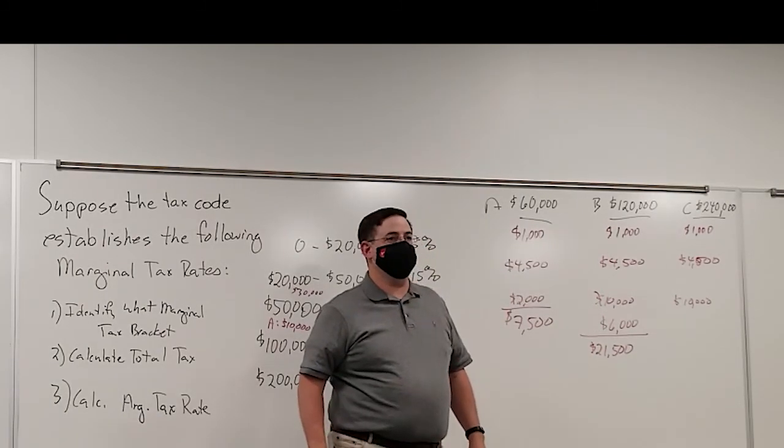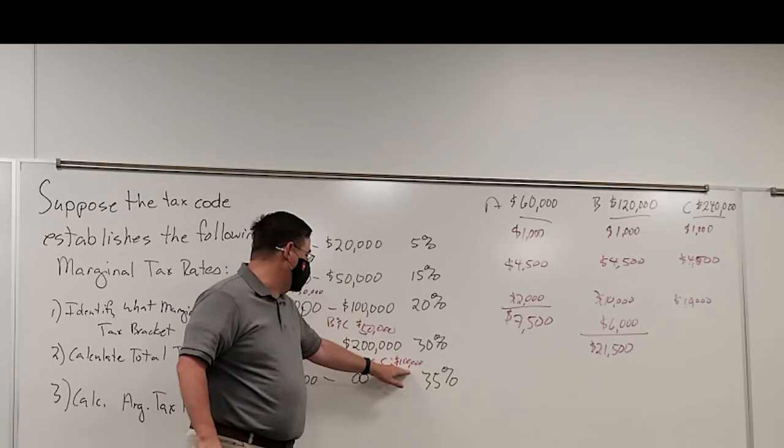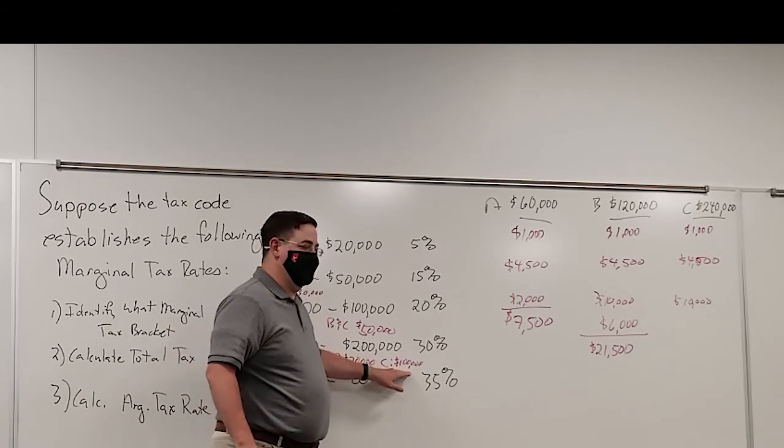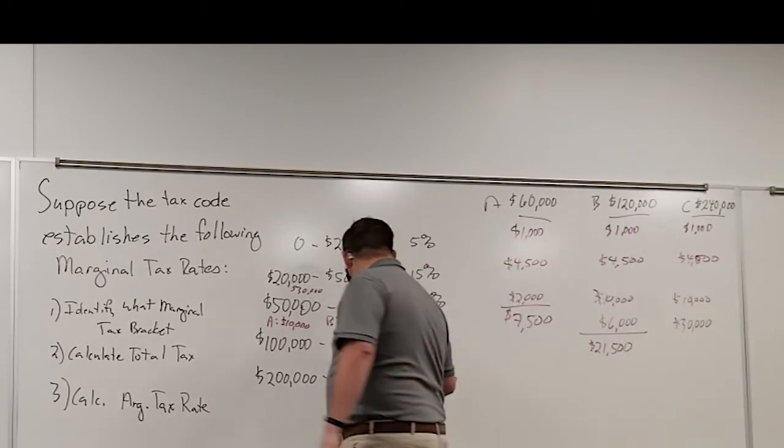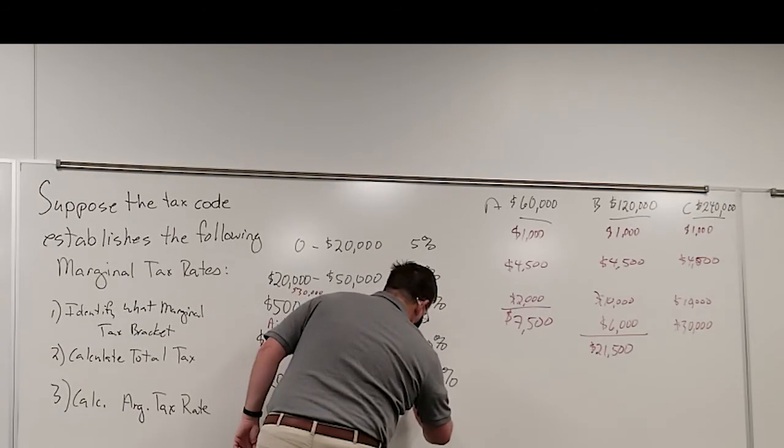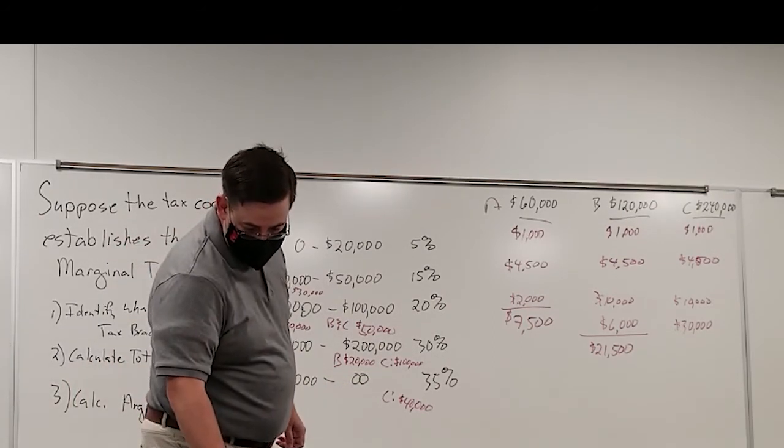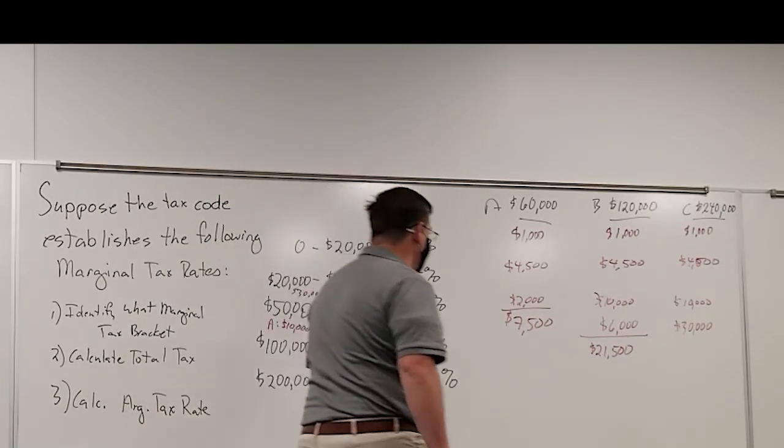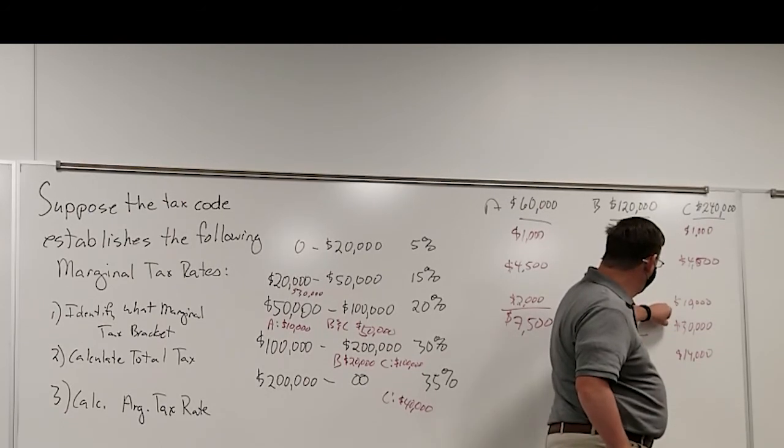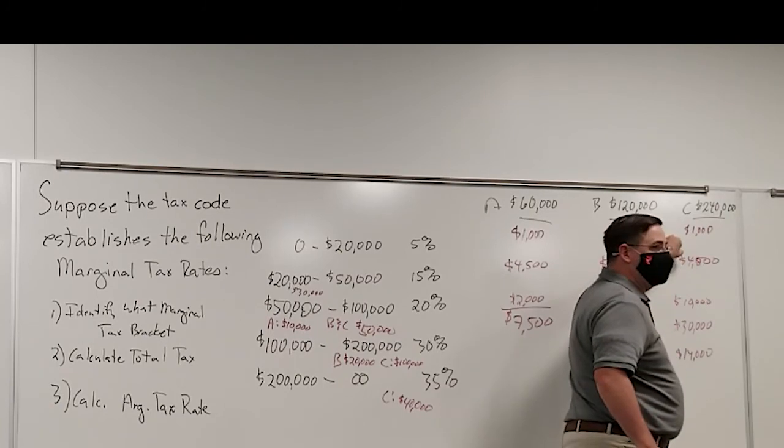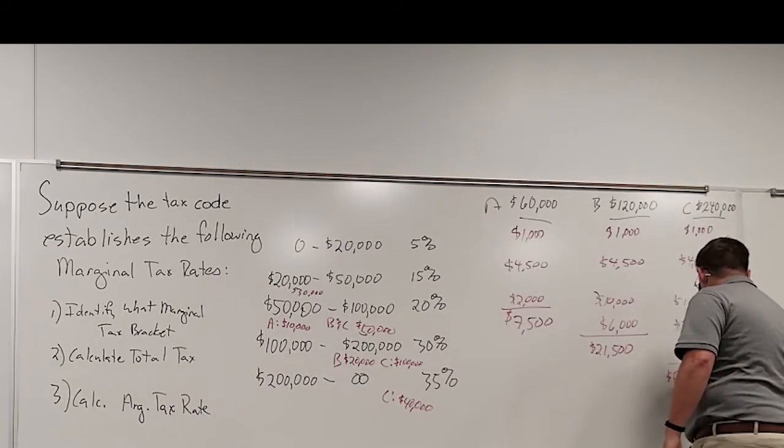And now family C pays 30% on that $100,000. So how much is that? $30,000. We're paying $30,000 in taxes for that money. And then family C also pays a 35% tax on this last $40,000 that they earned, which works out to $14,000. So family C is paying $59,500 in taxes.